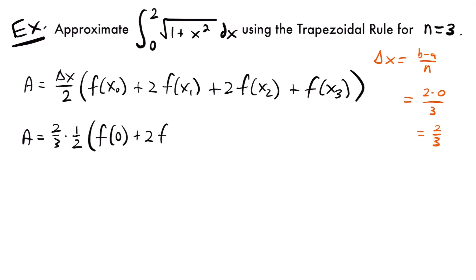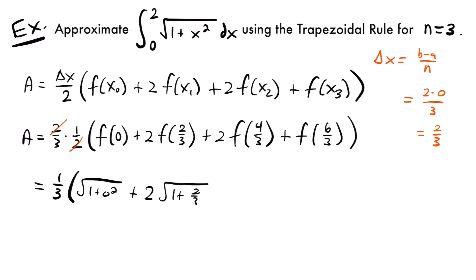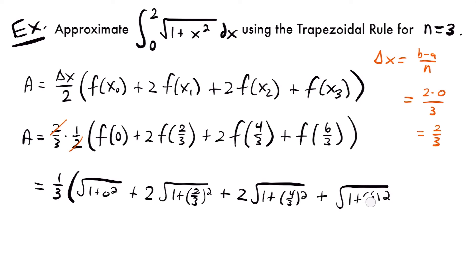So we have plus 2 times f of 2 thirds, then plus 2 times f of 4 thirds — adding another 2 thirds to the previous x value — and then plus f of 6 thirds. Note that 2 thirds times 1 half means the twos cancel, giving us 1 third. Our function is the square root of 1 plus x squared, so we plug in each x value. We get the square root of 1 plus 0 squared, plus 2 times the square root of 1 plus 2 thirds squared, plus 2 times the square root of 1 plus 4 thirds squared, plus the square root of 1 plus 2 squared.